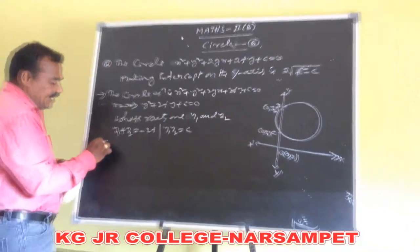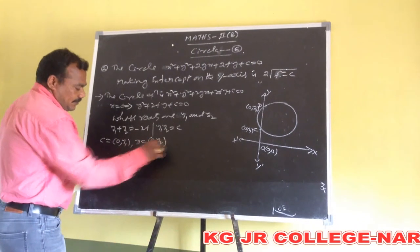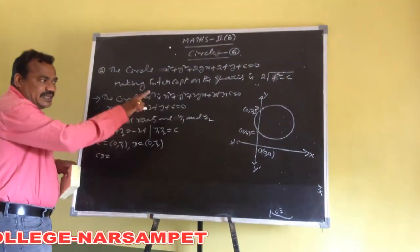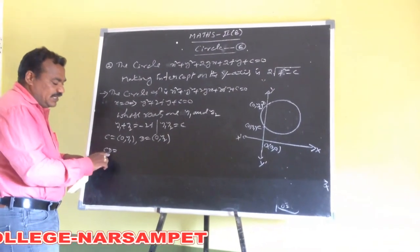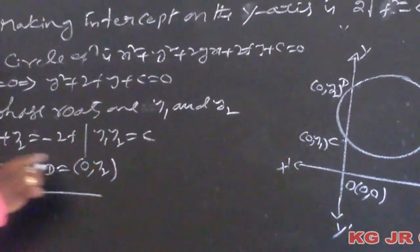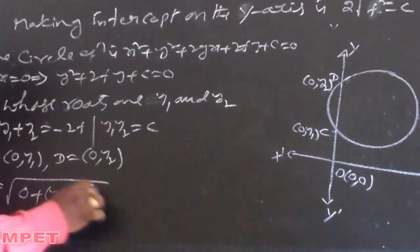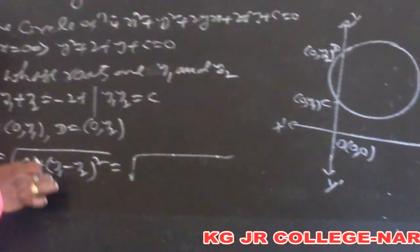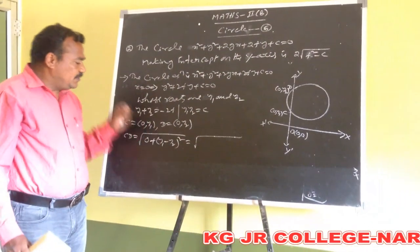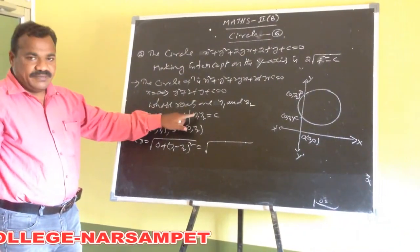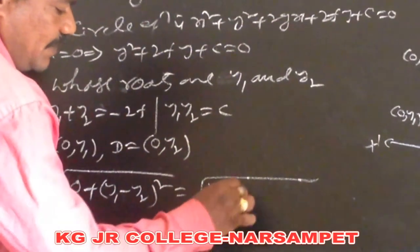The distance between the intersecting points on the y-axis is the y-intercept. CD equals under root of (0 minus 0)² plus (y1 minus y2)² equals under root of (y1 minus y2)². We know the values y1 plus y2 and y1·y2. Writing (y1 minus y2)² in terms of these: (y1 plus y2)² minus 4·y1·y2.